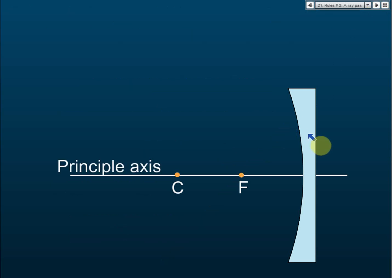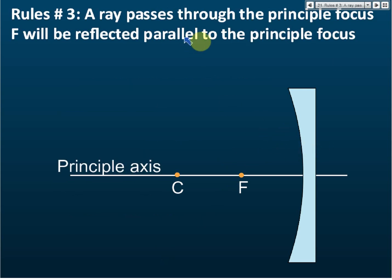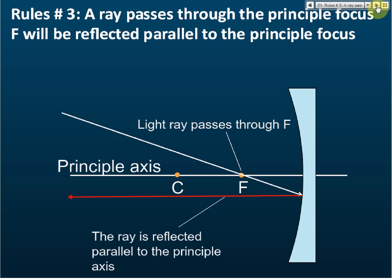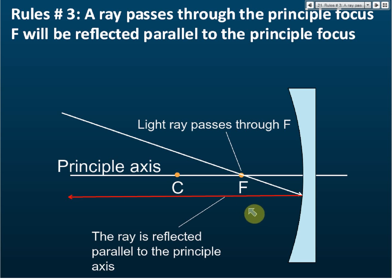Rule number three: a ray that passes through the principal focus F will be reflected parallel to the principal axis. So if a light ray passes through the principal focus, it will be reflected parallel to the principal axis. This is just the opposite of rule number two — if a ray is parallel to the principal axis it passes through F, and if it passes through F it reflects parallel to the principal axis.